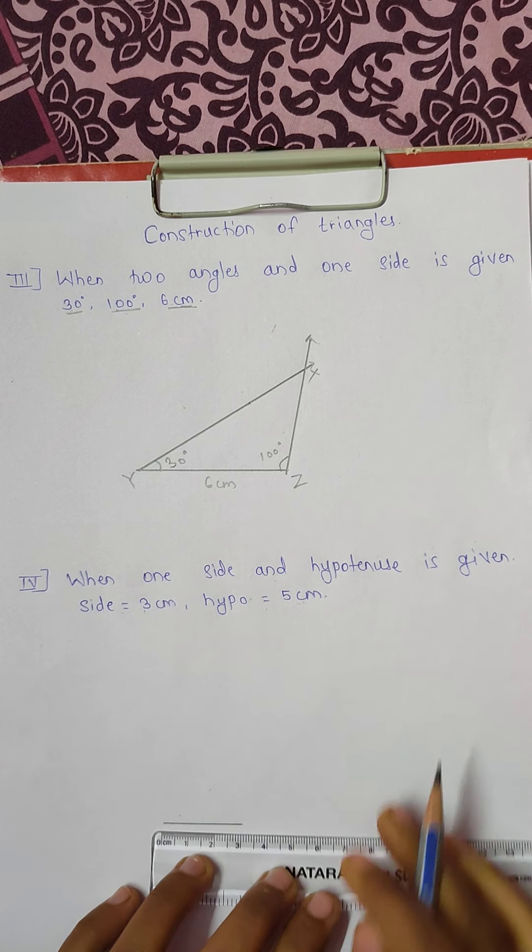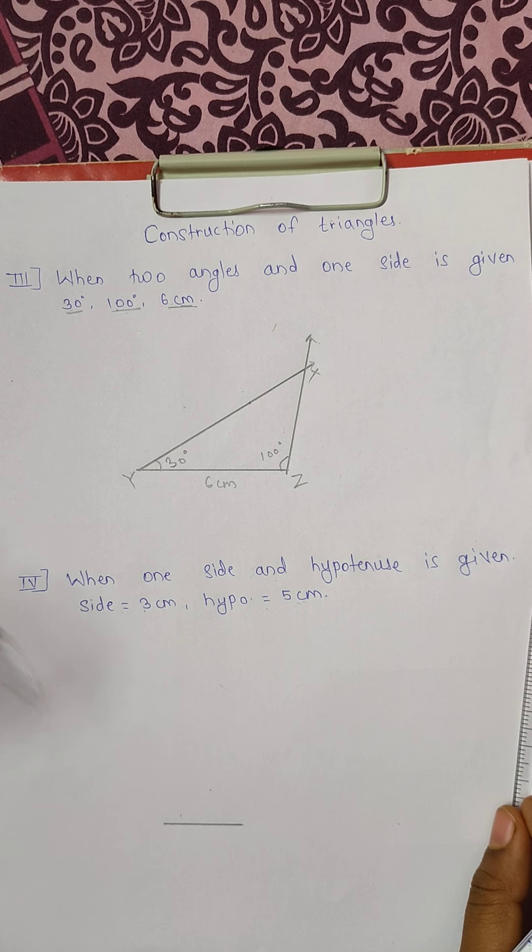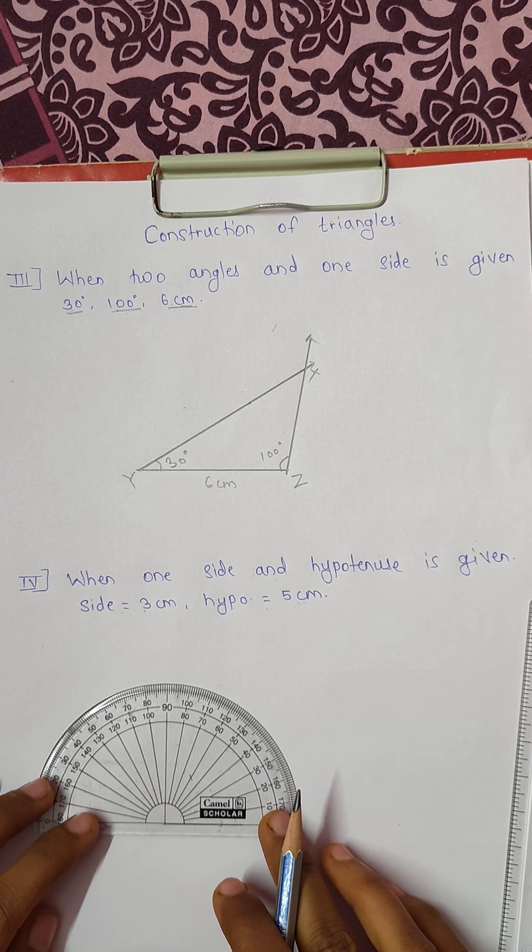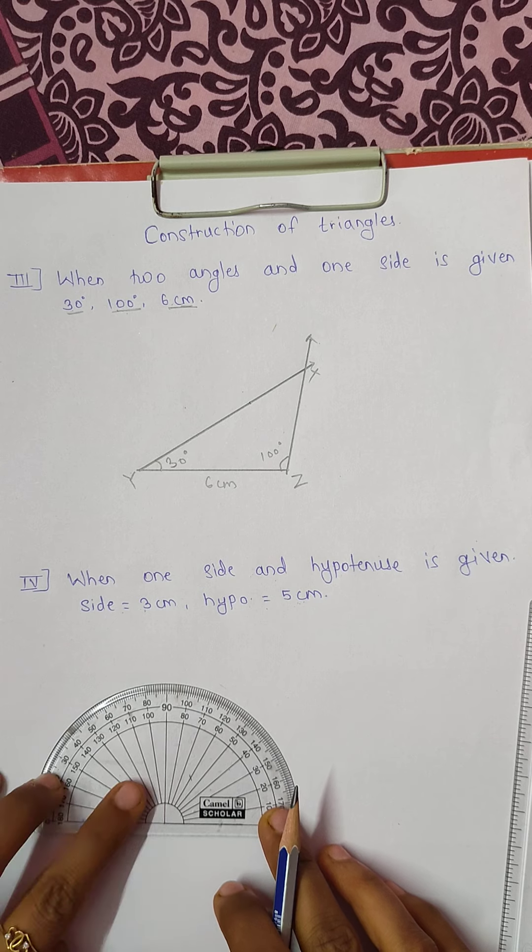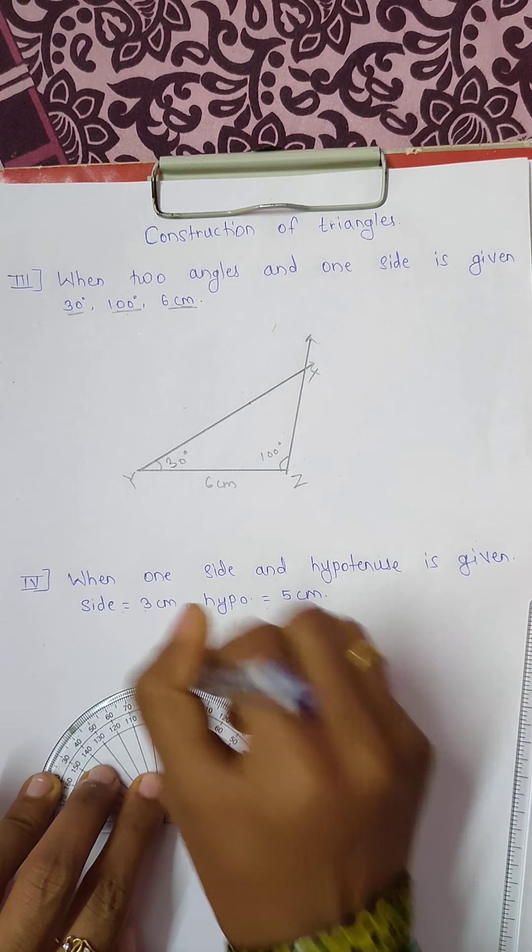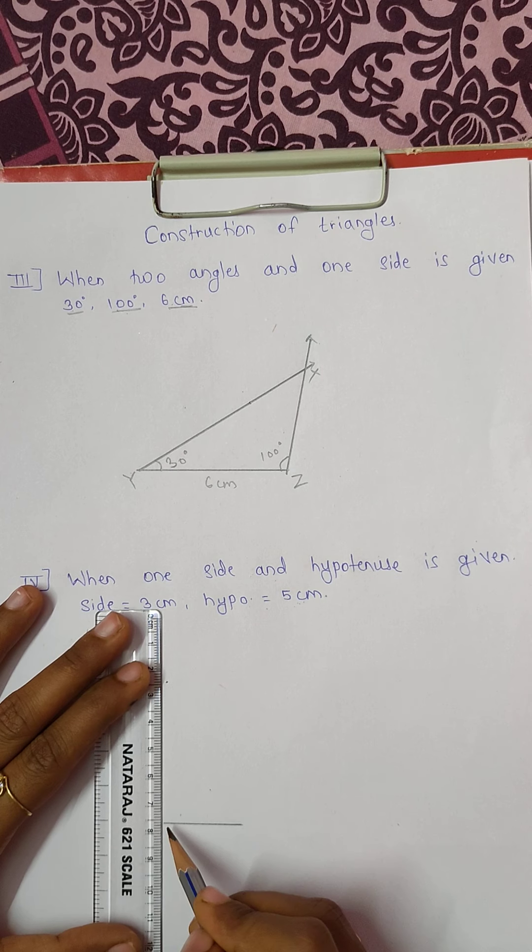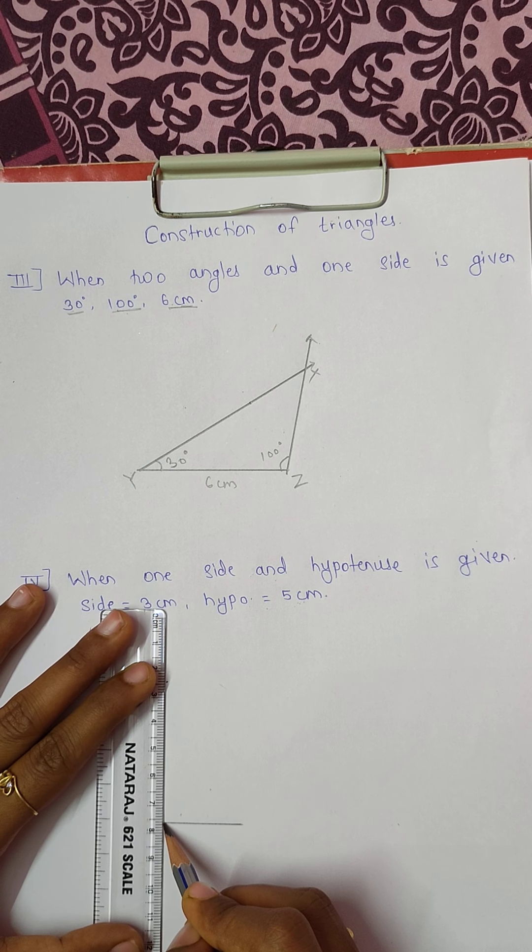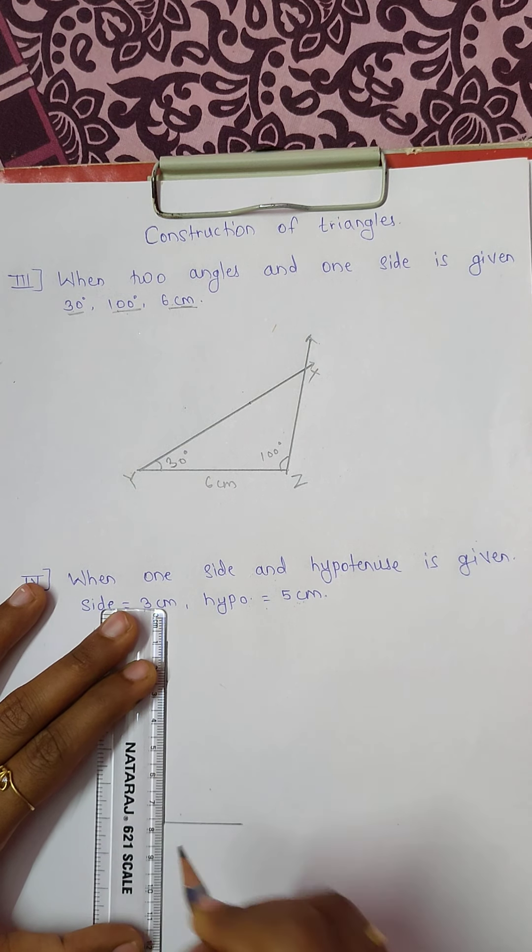Once the 3 centimeter line is drawn, with the help of a protractor, we will plot 90 degrees. Yes, a right angled triangle has an angle of 90 degrees. So I have plotted 90 degrees angle.